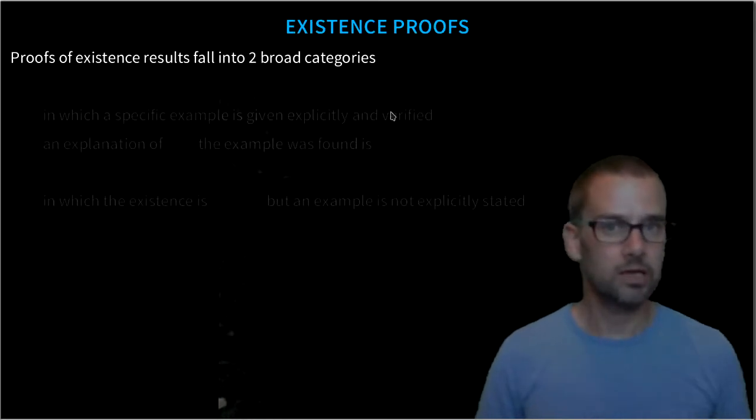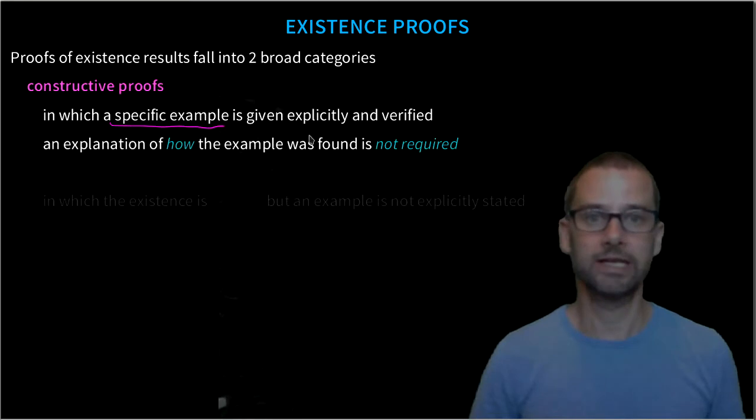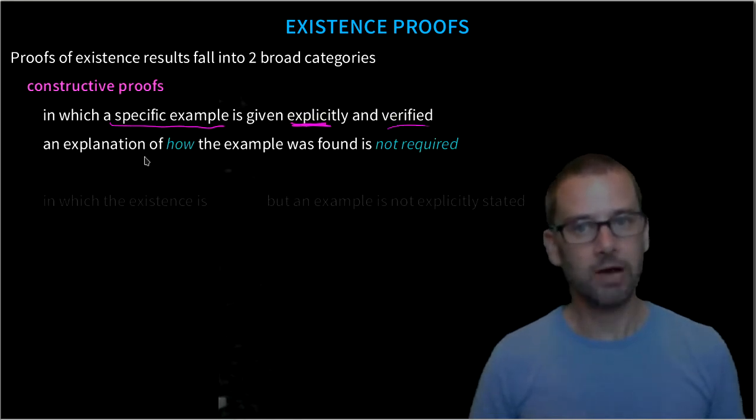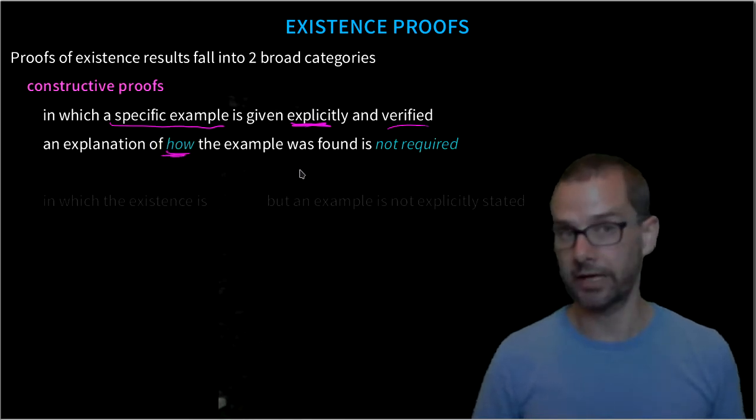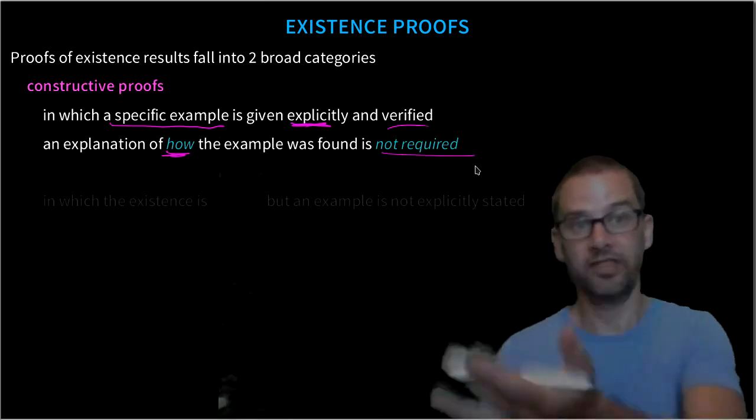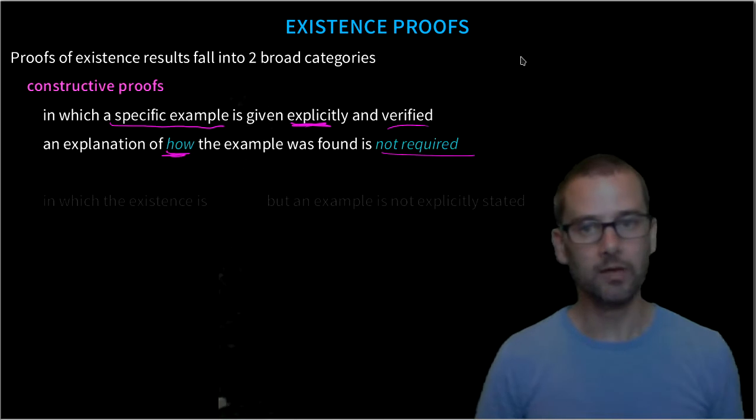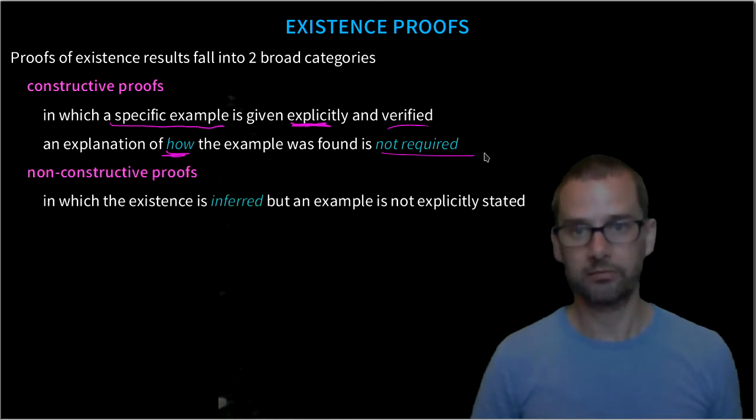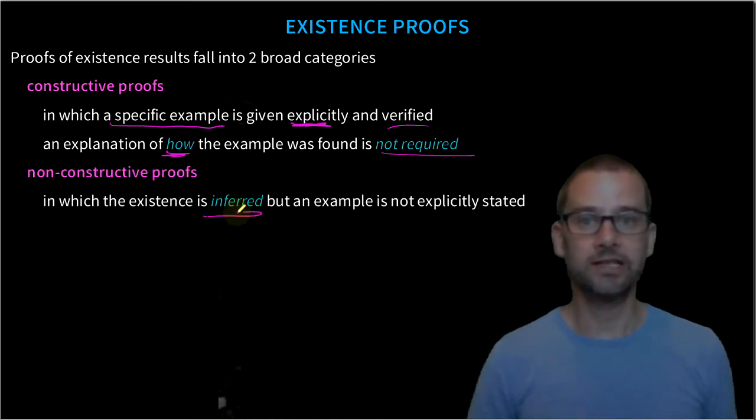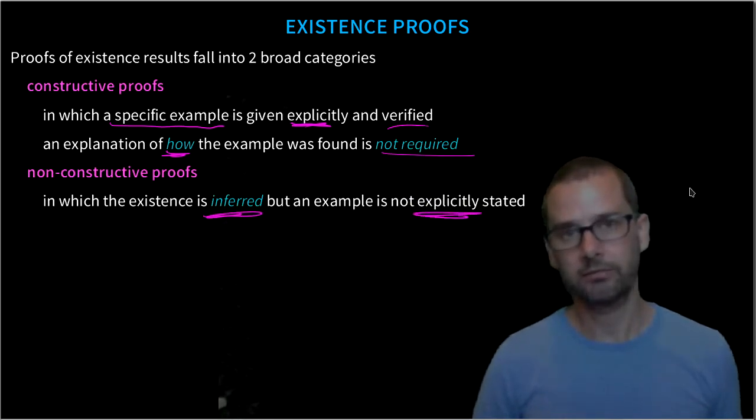So in this way, proofs of existence fall into two broad categories. Constructive proofs in which a specific example is explicitly constructed and verified. Mind you, an explanation of how we found that example isn't required. All we need to do is say, hey look, these numbers make it work, like we did in that first example. A non-constructive proof is the opposite of this. The existence is inferred, but the example is not explicitly stated.